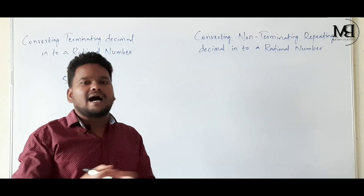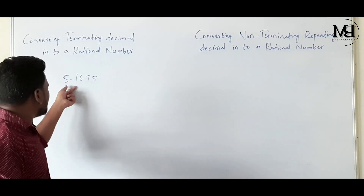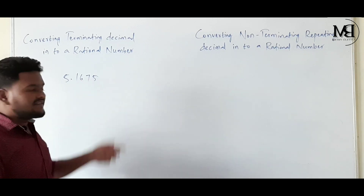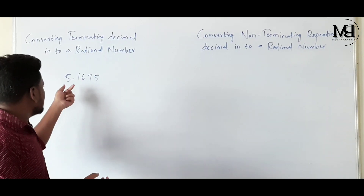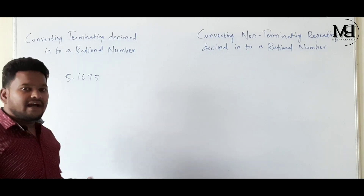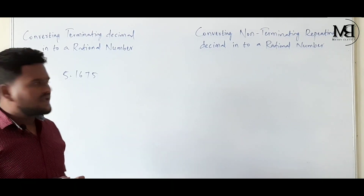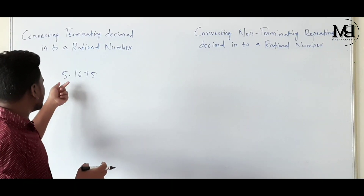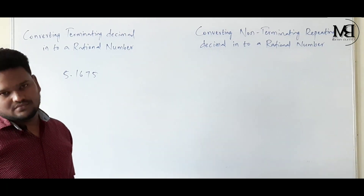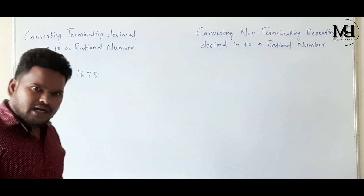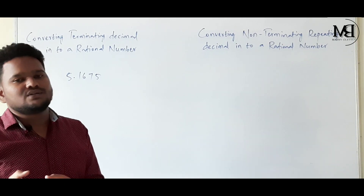The question will be asked as: show that 5.1675 is a rational number, or convert 5.1675 in the form P by Q, where P and Q are integers and Q is not equal to 0.